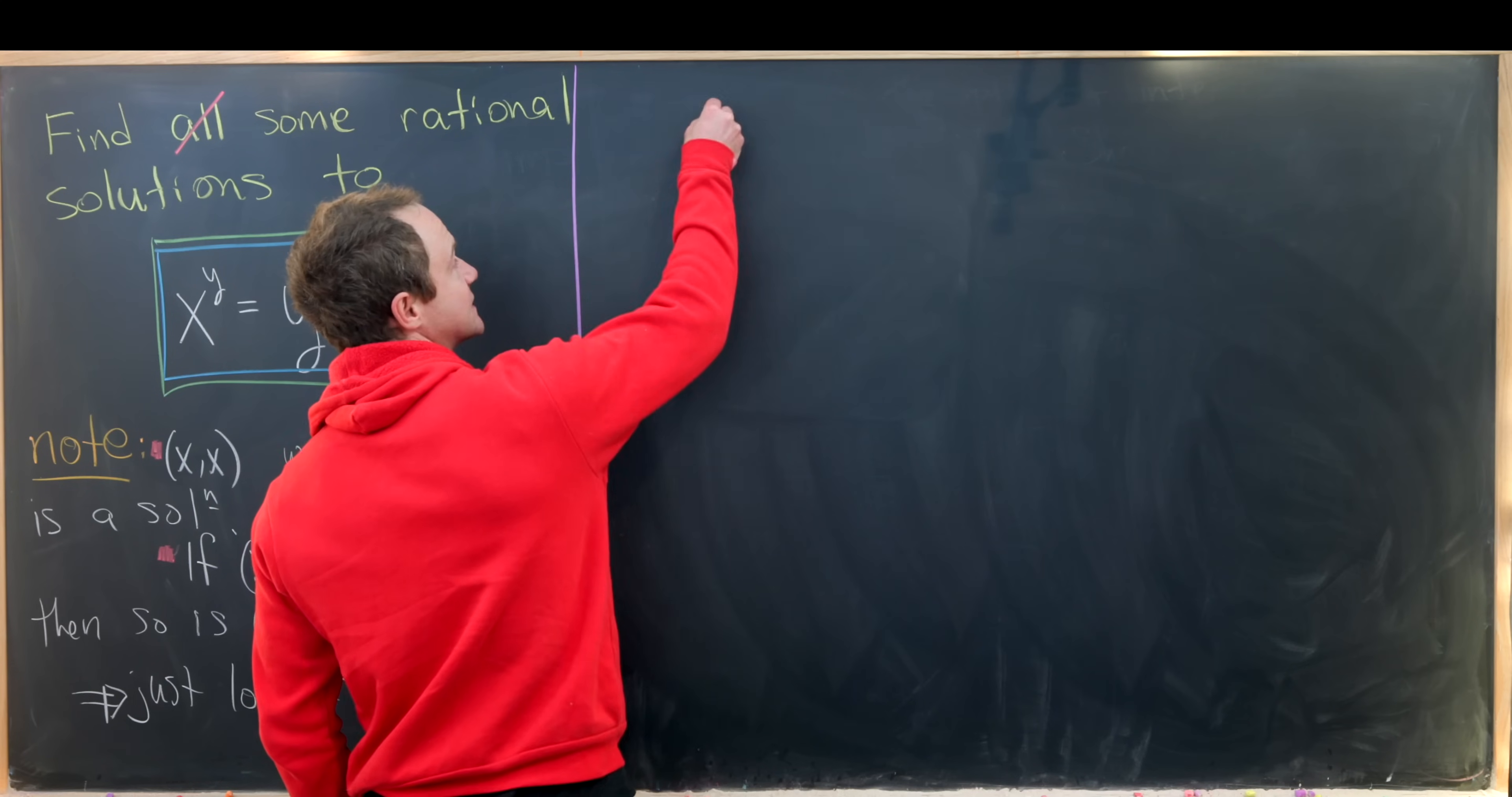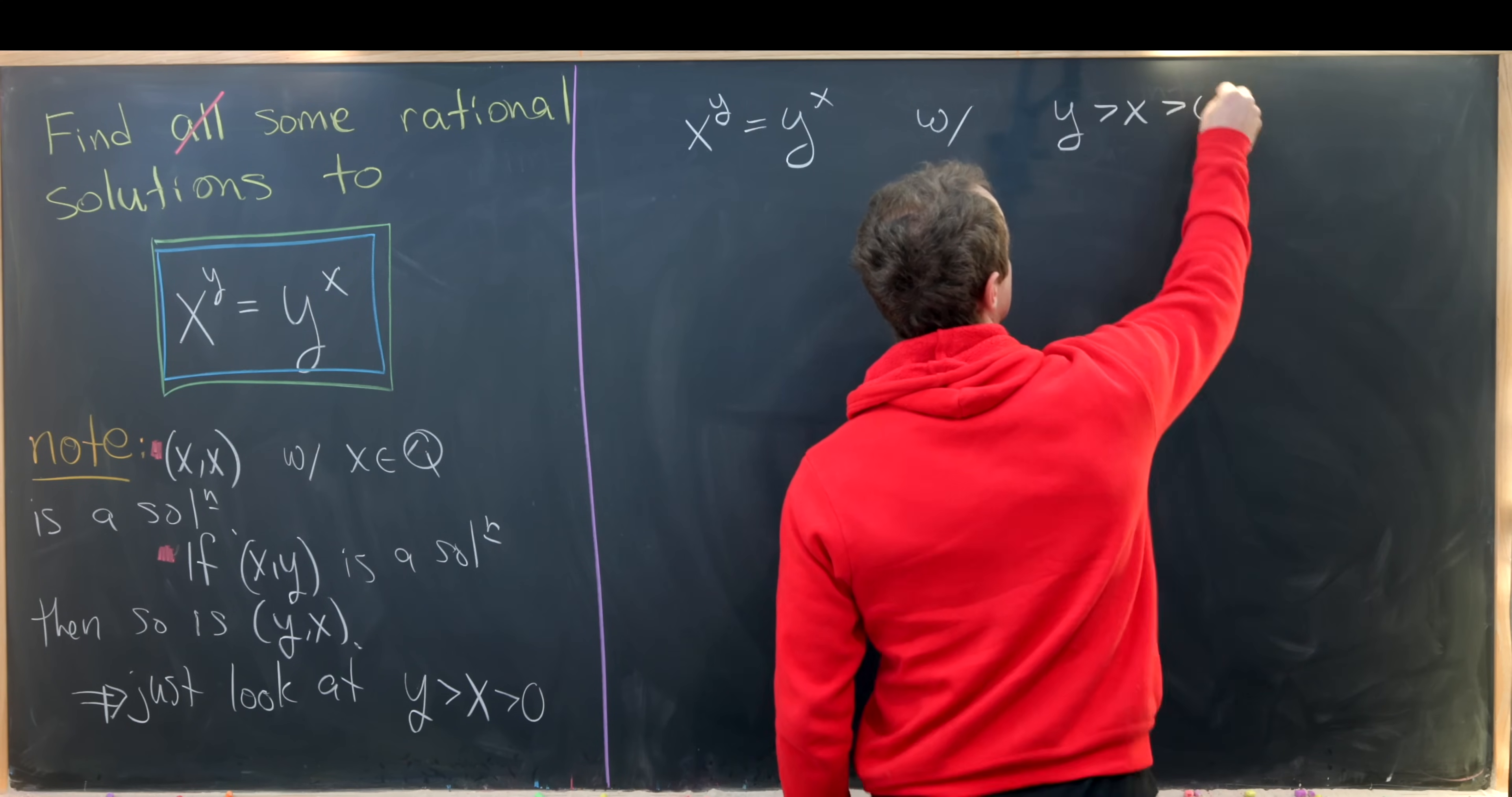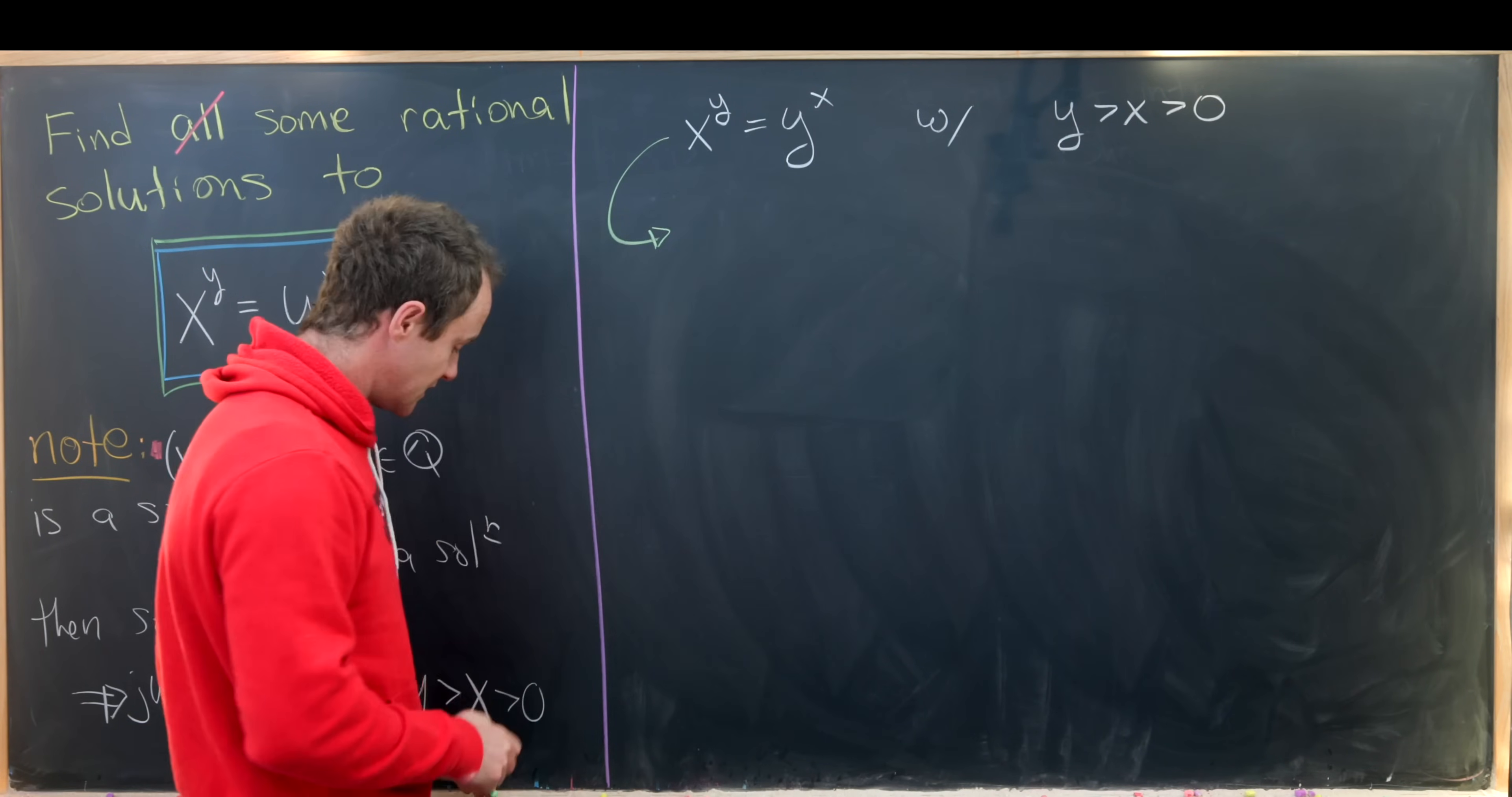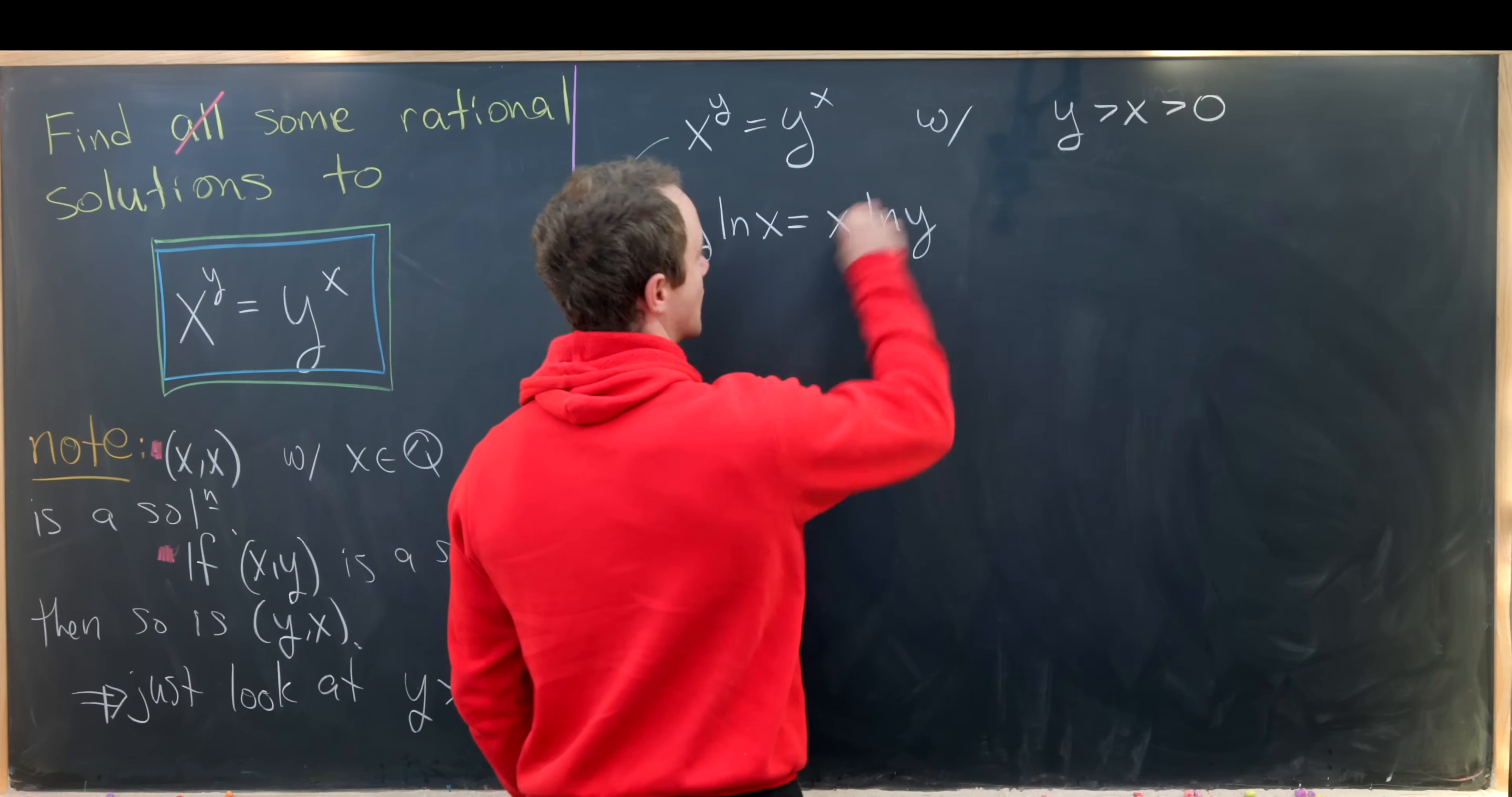So let's suppose we have a solution. So we know x to the y is the same thing as y to the x with y bigger than x bigger than zero. So now let's take the log of both sides, which is a standard kind of trick to reduce an exponential equation to some other sort of equation. So taking the log of both sides using logarithm rules, we'll have y natural log x equals x natural log y.